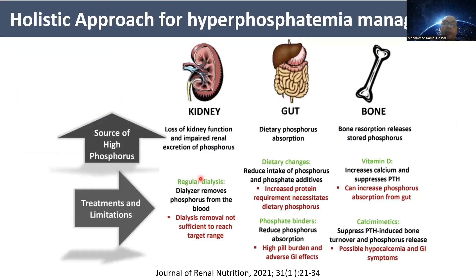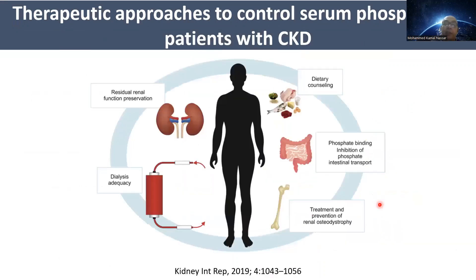You should use a holistic approach: target the kidney with adequate dialysis, target the gut with dietary phosphate restriction and phosphate binders, target the bone with vitamin D and calcimimetics, and try to preserve residual renal function to reach the target serum phosphate in CKD.